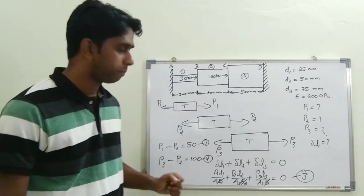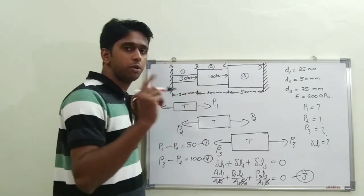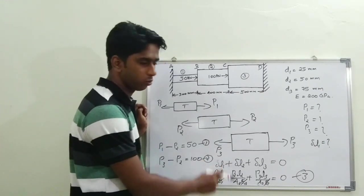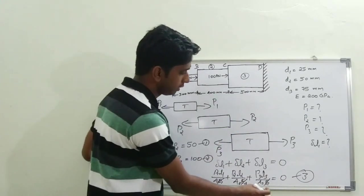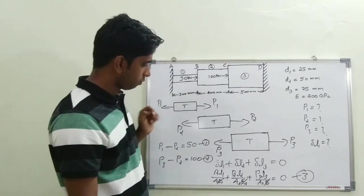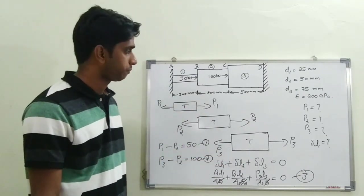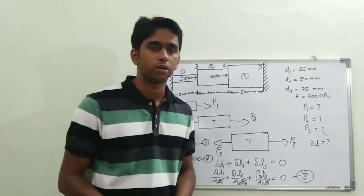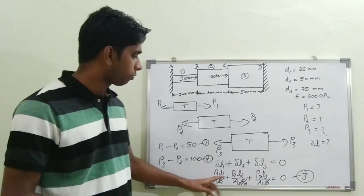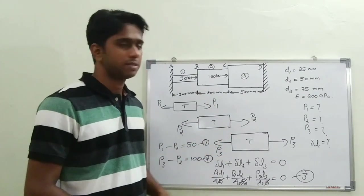Once P1, P2, and P3 are found, we can determine the displacements of points B and C. The displacement of point B is δL1, and the displacement of point C is δL3. These can be calculated separately. One important note: we initially assumed all three sections are in tension, but this may not be correct.